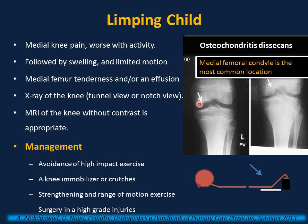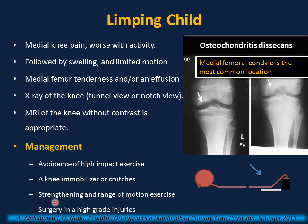Osteochondritis dissecans can cause knee pain and limping in children. It is most likely due to repetitive microtrauma, which can cause avascular necrosis and separation of an osteochondral fragment. Clinical presentation is medial knee pain worsening with activity, followed by swelling and limited motion. If the fragment is separated or displaced, this can cause catching and locking. Physical exam shows medial femoral tenderness or effusion. The most sensitive X-ray view is the notch or tunnel view; order MRI if X-ray is negative. Management: avoidance of high-impact exercise like jumping and running until pain resolves and X-ray looks normal. Knee immobilizer or crutches until pain-free, followed by strengthening and range of motion exercises. Surgery for high-grade injuries.